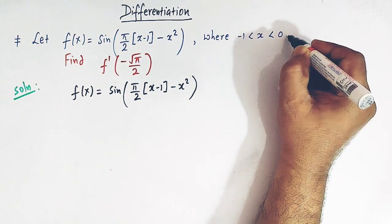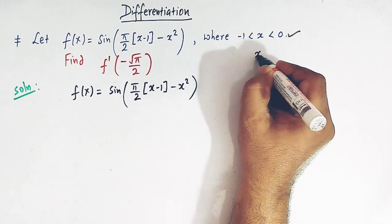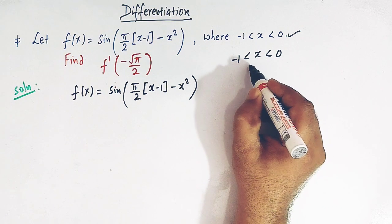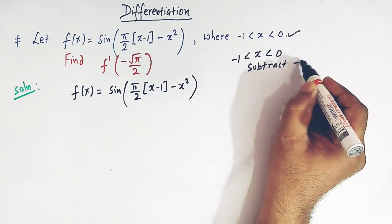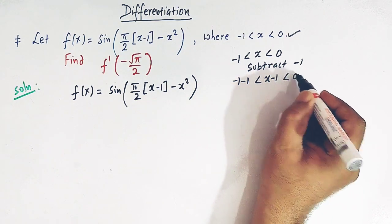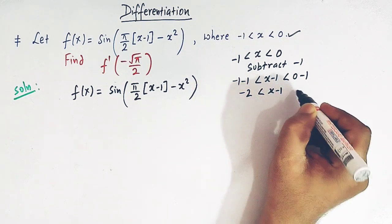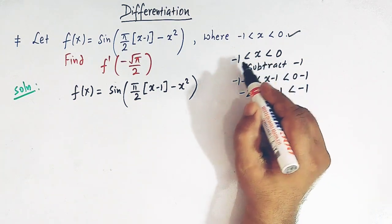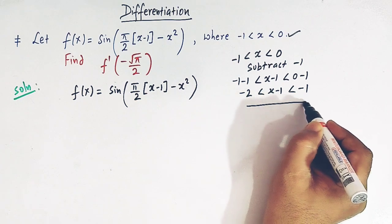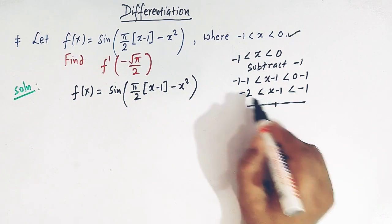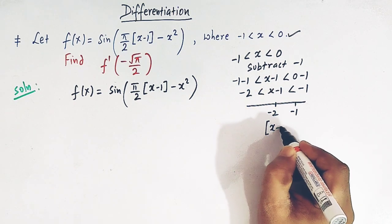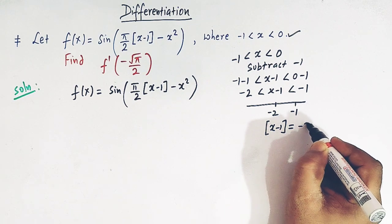We will make use of the given inequality. Since x lies between minus 1 and 0, we subtract 1 throughout to get: minus 2 is less than x minus 1, which is less than minus 1. So when x lies between minus 1 and 0, x minus 1 lies between minus 2 and minus 1. From the definition of the greatest integer function, the greatest integer of x minus 1 equals minus 2.